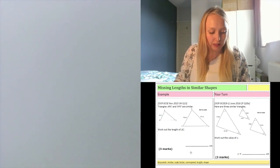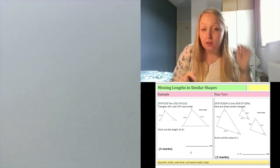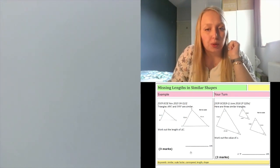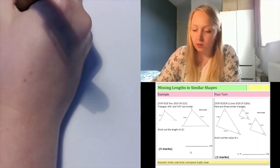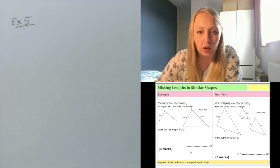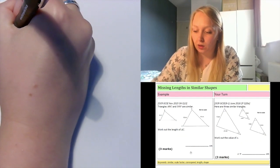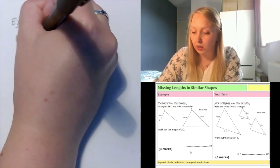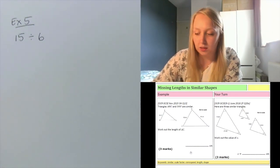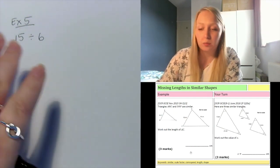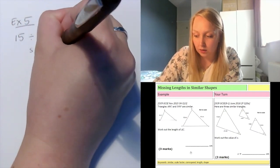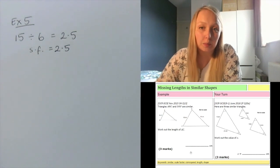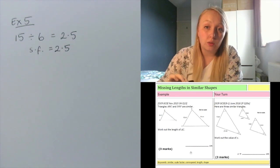Let's have a look at example 5, our last example. Triangles ABC and DEF are similar. Work out the length of AC — the right hand slanted side of the smaller triangle. To find the scale factor, I need corresponding sides. The left hand side of both triangles: the bigger shape is 15 centimetres and the smaller shape is 6 centimetres. I do 15 divided by 6, which gives 2.5. That is my scale factor — not in centimetres — telling me how many times bigger those sides are on the big shape.